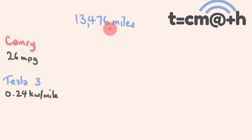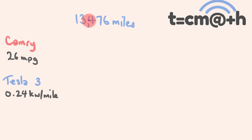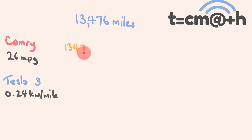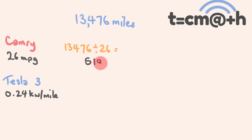So how much petrol would you need to drive this far in a Camry? A Camry gets 26 miles per gallon and we have to drive 13,476 miles. So how many lots of 26 are in 13,476? We go 13,476 miles divided by 26 miles per gallon, and that tells us how many gallons we'll be using. The answer is 518 gallons.